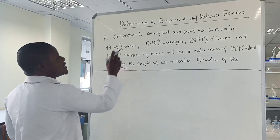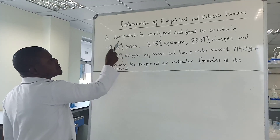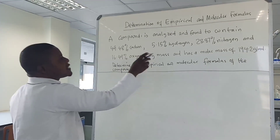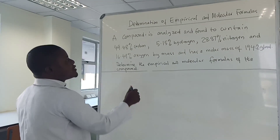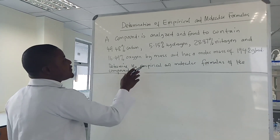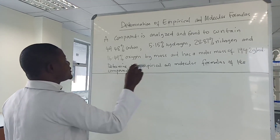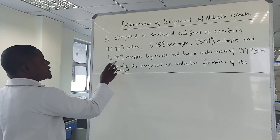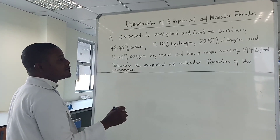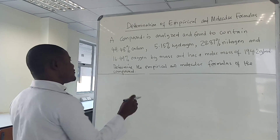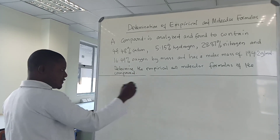In this tutorial we shall look at determination of empirical and molecular formulas. A compound is analyzed and found to contain 49.48% carbon, 5.15% hydrogen, 28.87% nitrogen, and 16.49% oxygen by mass, and has a molar mass of 184.2 grams per mole. Determine the empirical and molecular formulas of the compound.